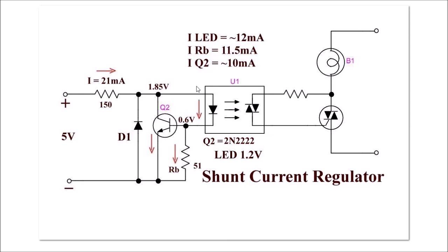You will have approximately, in this case for illustration purposes, 12 milliamps moving through the emitter LED. Now approximately 11.5 milliamps are going to go through this resistor Rb, which is 51 ohms, to ground.